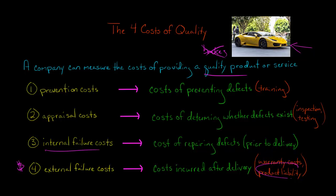Product liability costs are also another type of external failure costs. Let's say there is a problem with the brakes — we didn't train people properly, and we didn't catch the defect or repair it before it left our factory. It gets in the customer's hands, the brakes don't work, and they end up crashing. There's a fiery crash and people unfortunately die.